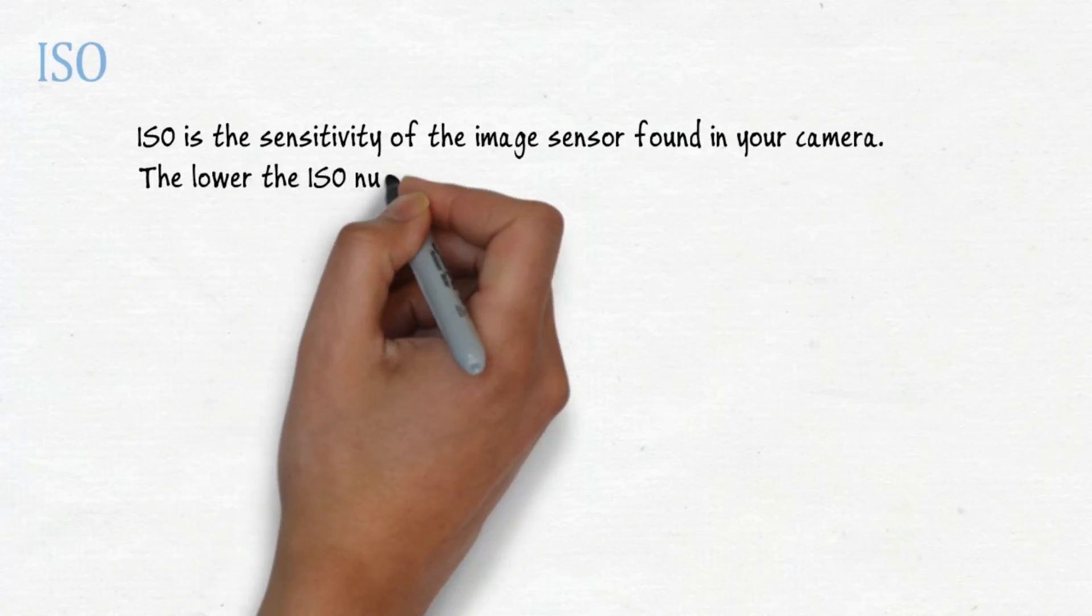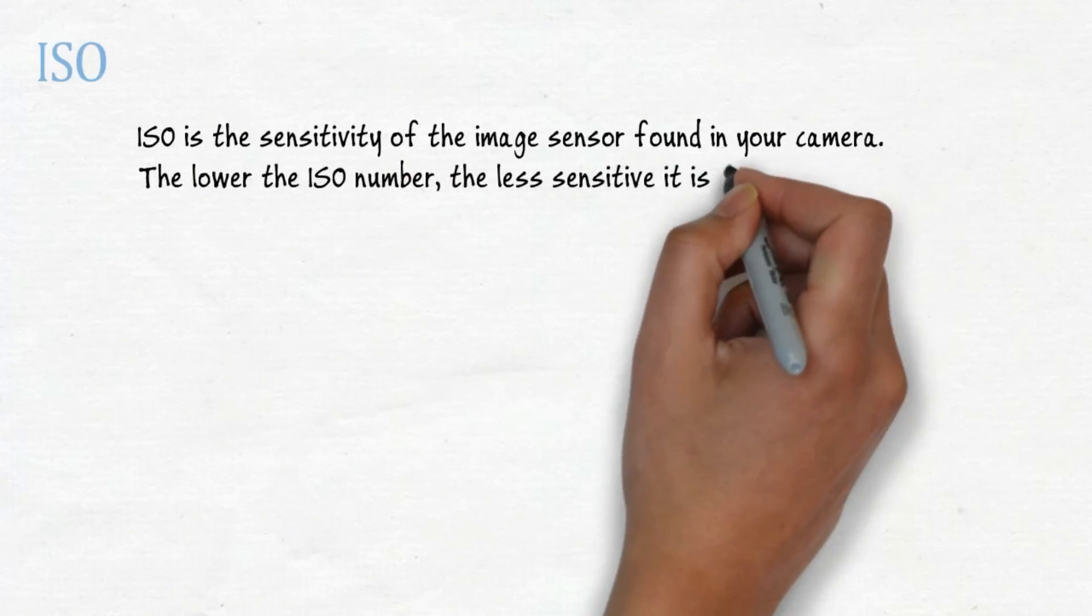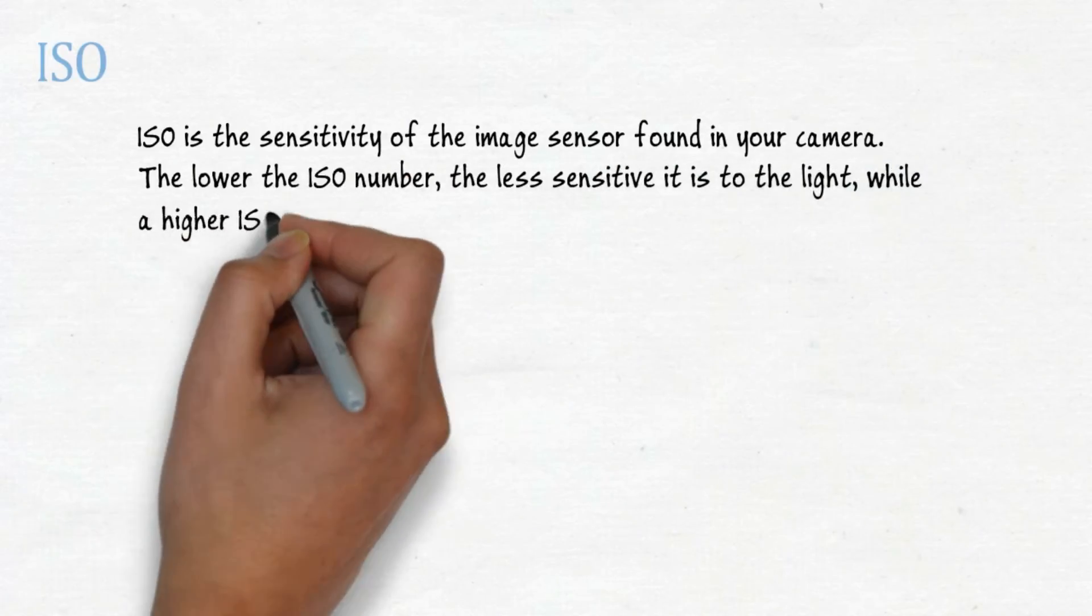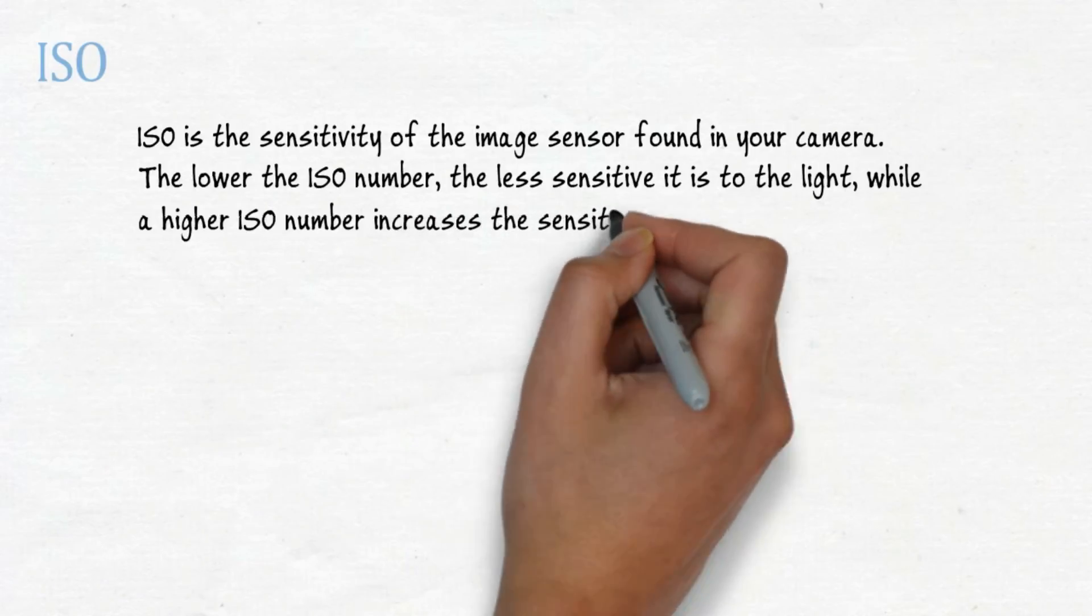The lower the ISO number, the less sensitive it is to the light, while a higher ISO number increases the sensitivity of your camera.